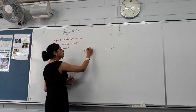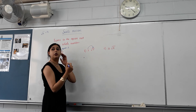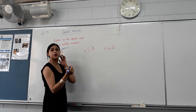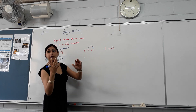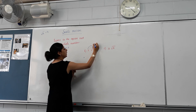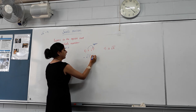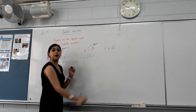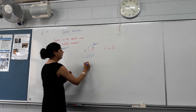Next one: we need to move the 2 inside the square root sign. What's the opposite operation of square root? Squaring. So 2 squared is 4.